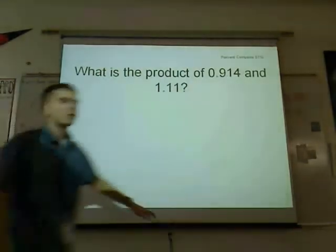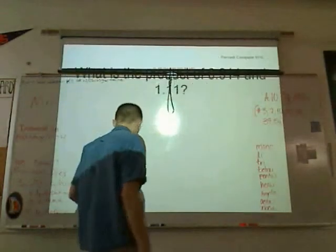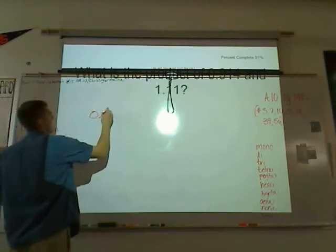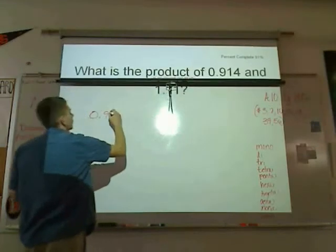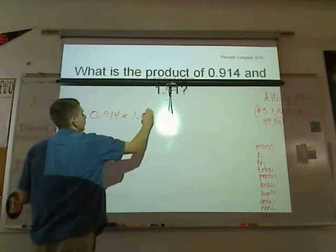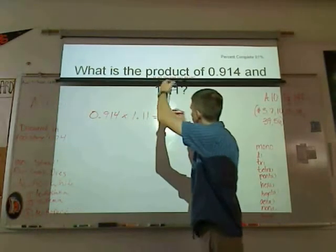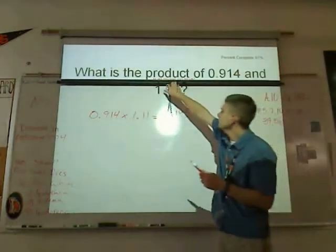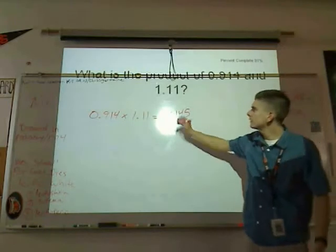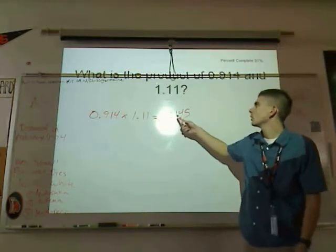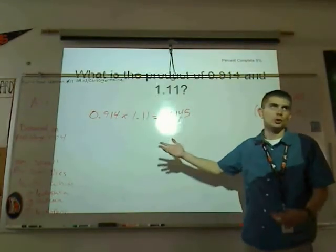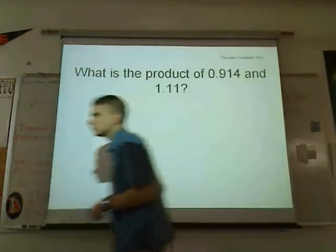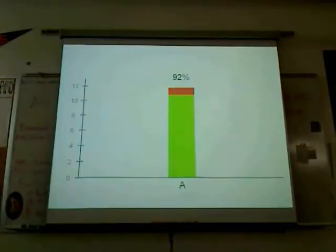Smartboard mode, activate. So 0.914 times 1.11 — if you did that out, that would equal about 1.0145. You only get 3 sig figs, so you only get these: it's 1.01. If this 4 was a 5 or higher, it would be 1.02, but it's not, so it's 1.01. Everybody type in 1.01 — almost everybody, after I told you the answer, got it right.